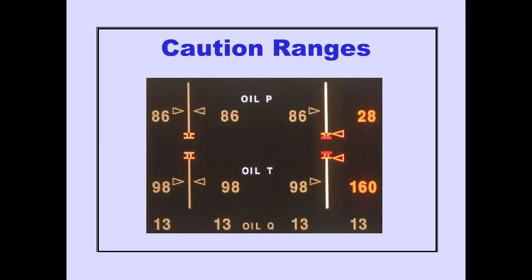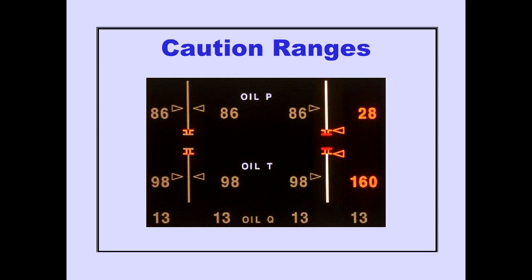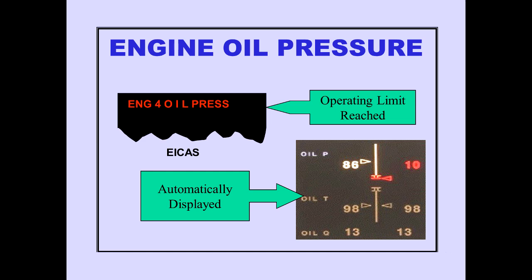Caution ranges are displayed by amber bands. When oil pressure or temperature enters the caution range, the indicators change color to amber. Operating limits are displayed by red lines. When pressure or temperature reaches the operating limit, the indicators change color to red. The ICAS advisory message, engine oil pressure, is displayed when an engine's oil pressure reaches the operating limit.